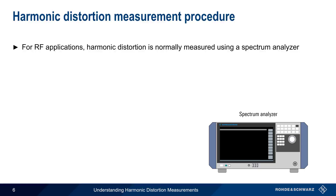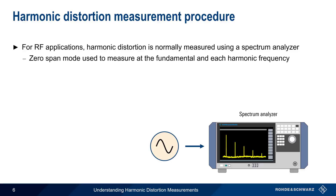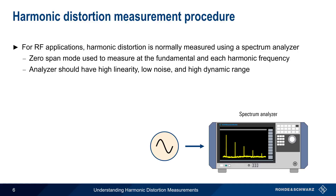The DUT, or device under test — here an oscillator — is connected to the analyzer, and the analyzer then uses something called zero-span mode to measure the power of the fundamental and of each harmonic individually. The analyzer itself should have high linearity to avoid harmonics being generated within the analyzer, and should also have low noise and a high dynamic range, since the difference in amplitude between the fundamental and the highest order harmonic of interest can be quite large.